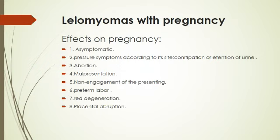Leiomyoma with pregnancy is usually managed conservatively with rest in bed, analgesics if needed, and a good diet. The only stage requiring surgical interference is red degeneration. All other types of leiomyoma can be managed conservatively until after delivery. Myomectomy during caesarean section is not recommended because of the risk of excessive bleeding that may lead to the patient's death.